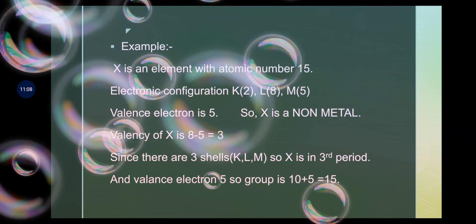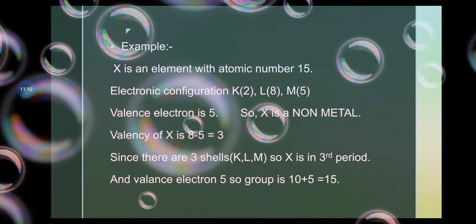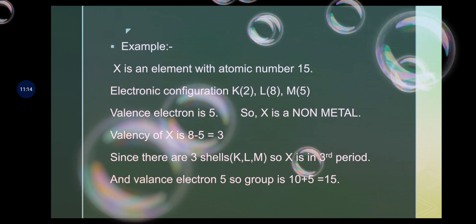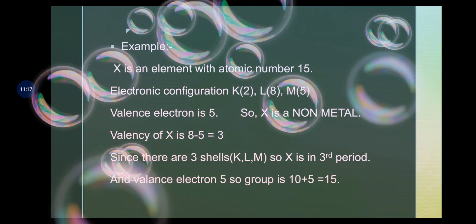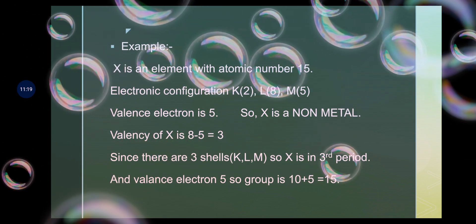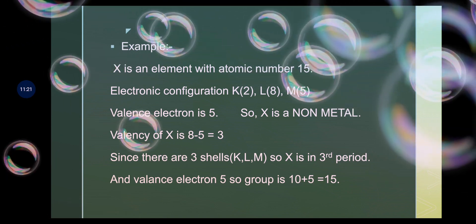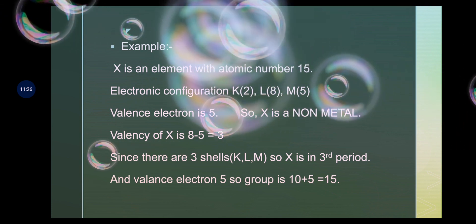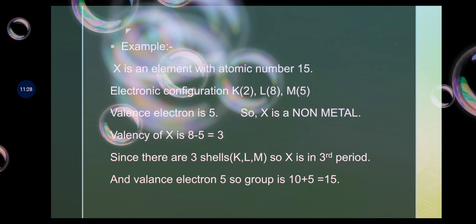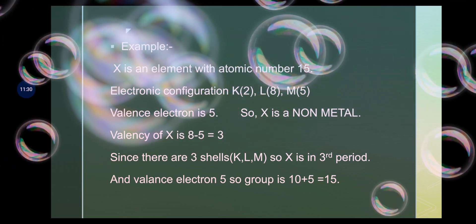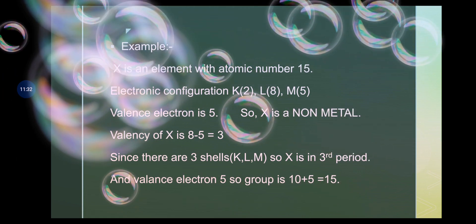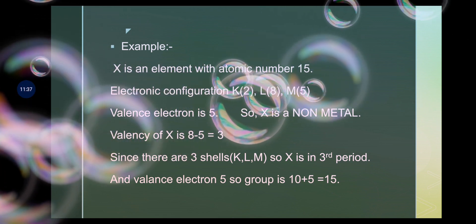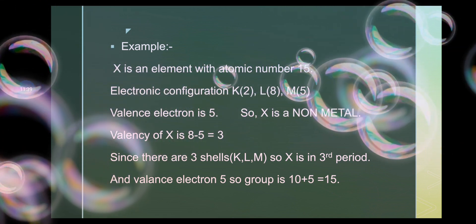By knowing the atomic number, we can find out four most important properties of an element: number one, we can find the electronic configuration; number two, we can say whether the element is a metal or non-metal; number three, we can find out the valency; number four, we can find the exact position of the element in the periodic table. So atomic number tells us all these important things. Thank you.